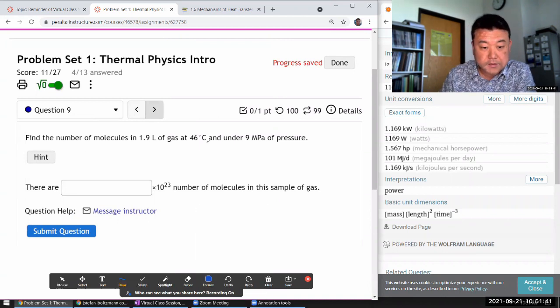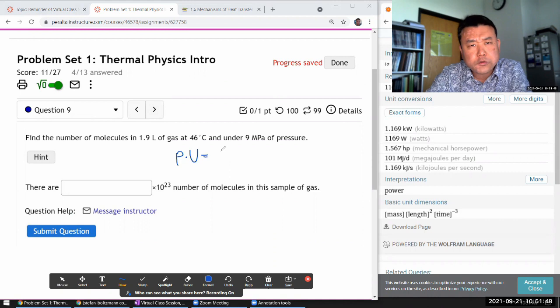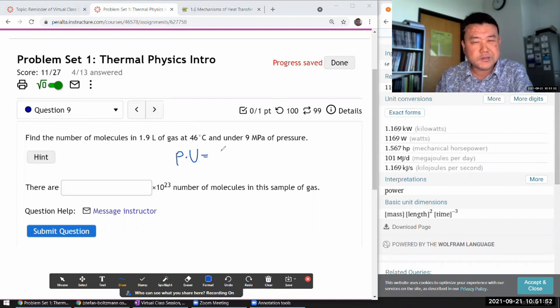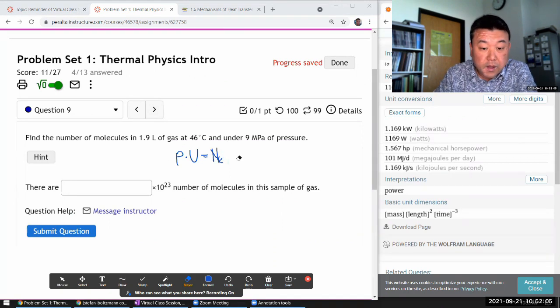Ideal gas law says pressure times volume equals—and I'm always going to use this version which I call the physics version because it avoids unnecessary use of arbitrary constants like Avogadro's number, which is useful in chemistry but not so much in physics—the number of molecules (which is what we want) times the Boltzmann constant (not the gas constant) times the temperature.